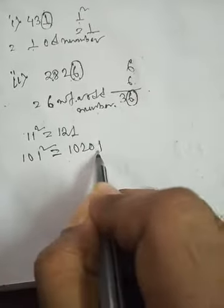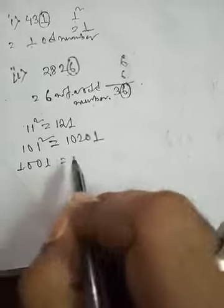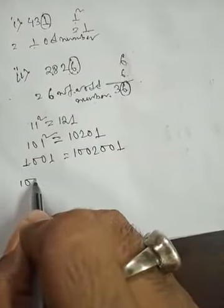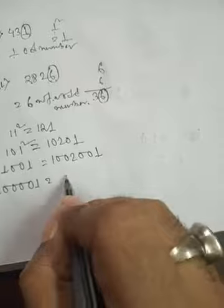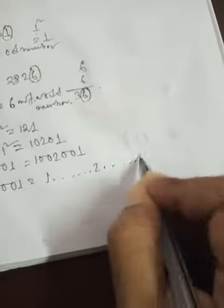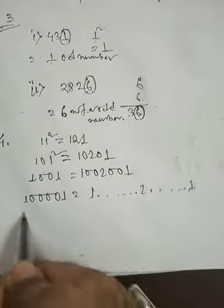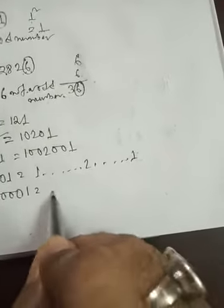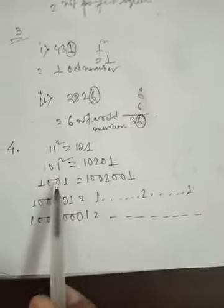10201. Again, if there are two zeros in between the ones, then it will be 1002001. Now if there are four zeros between the ones, we have to fill in the blanks. And next, after that, six zeros — 1, 2, 3, 4, 5, 6 zeros — what will we write in the blanks?